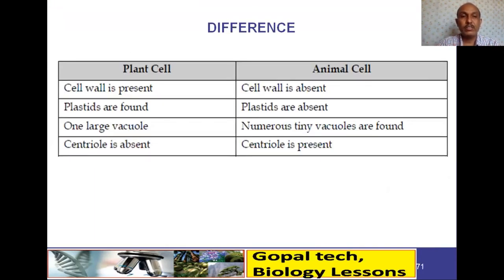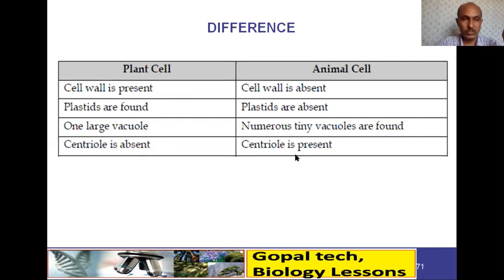Comparing plant and animal cells: cell wall is present in plant cells and absent in animal cells; plastids are present in plant cells and absent in animal cells; plant cells have one large vacuole while animal cells have numerous tiny vacuoles; centrioles are absent in plant cells but present in animal cells.